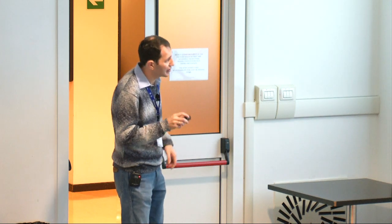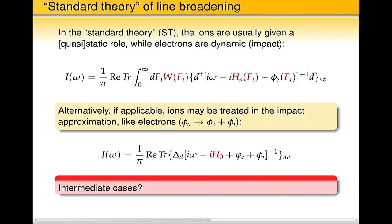If you take real part of this complex denominator, actually its operator, you will get Lorentzian shape modified, a general Lorentzian shape. Let's not go into the details. But the basic idea of standard theory of line broadening is strict separation of slow particles, which are usually ions, and fast particles, which are usually electrons.